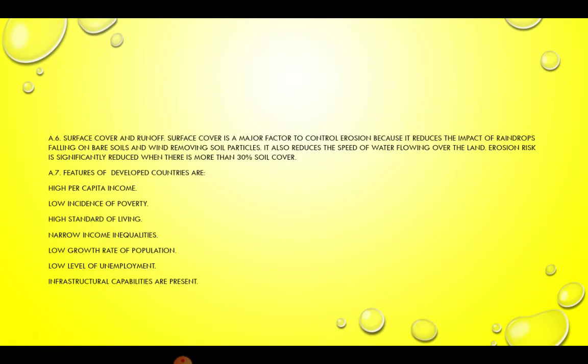Answer 6. Surface cover and runoff. Surface cover is a major factor in controlling erosion because it reduces the impact of raindrops falling on bare soils and wind removing soil particles. It also reduces the speed of water flowing over the land. Erosion risk is significantly reduced when there is more than 30 percent soil cover.